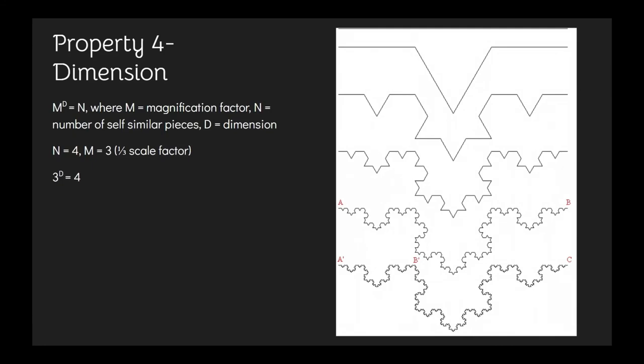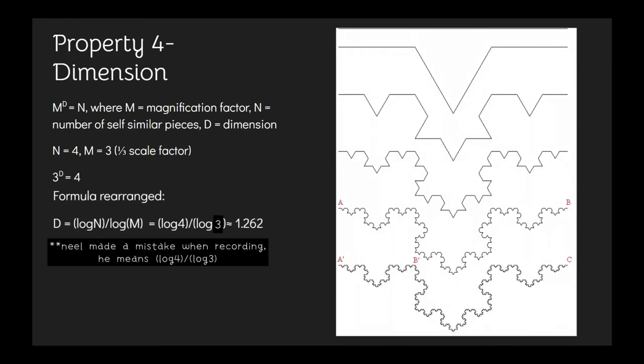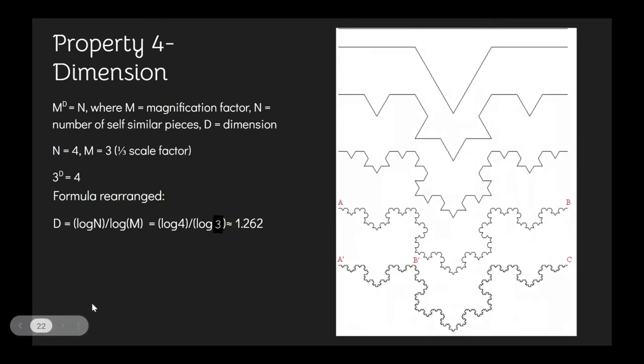In this case, there are 4 self-similar pieces created every iteration, and the magnification factor is 3, because the scale factor is 1 third. The formula rearranged is shown here, and when you do log 4 divided by log 3, you get 1.262, which means that the length between two points on the Koch curve is infinite, so it is more complex than a one-dimensional figure, but not detailed enough to be two-dimensional.